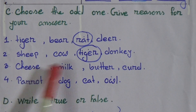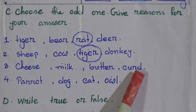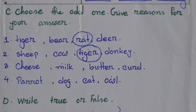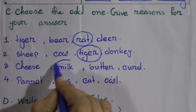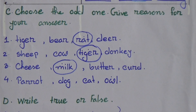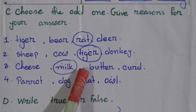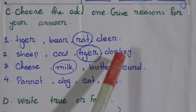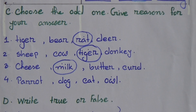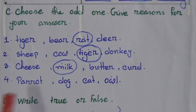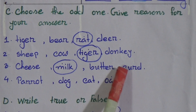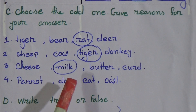Number 3: Cheese, milk, butter, curd. Here, milk is odd. Why is milk odd? Because cheese, butter and curd are all made from milk. But milk is not made from milk — we get milk from cow, goat or other animals. That's why milk is odd here.